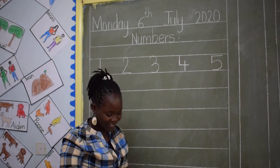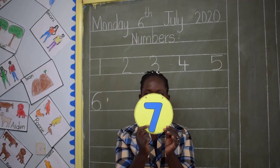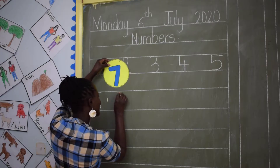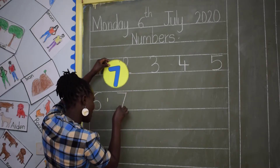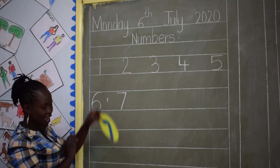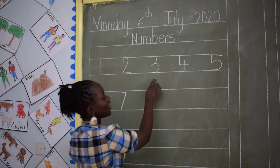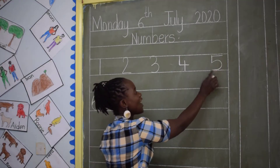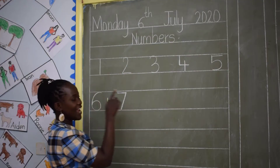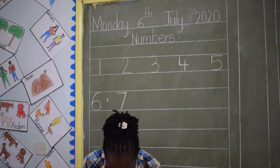7 is our next number. Number 7. Let's count again: 1, 2, 3, 4, 5, 6, 7, 8. Our next number is number 8. This is number 8.